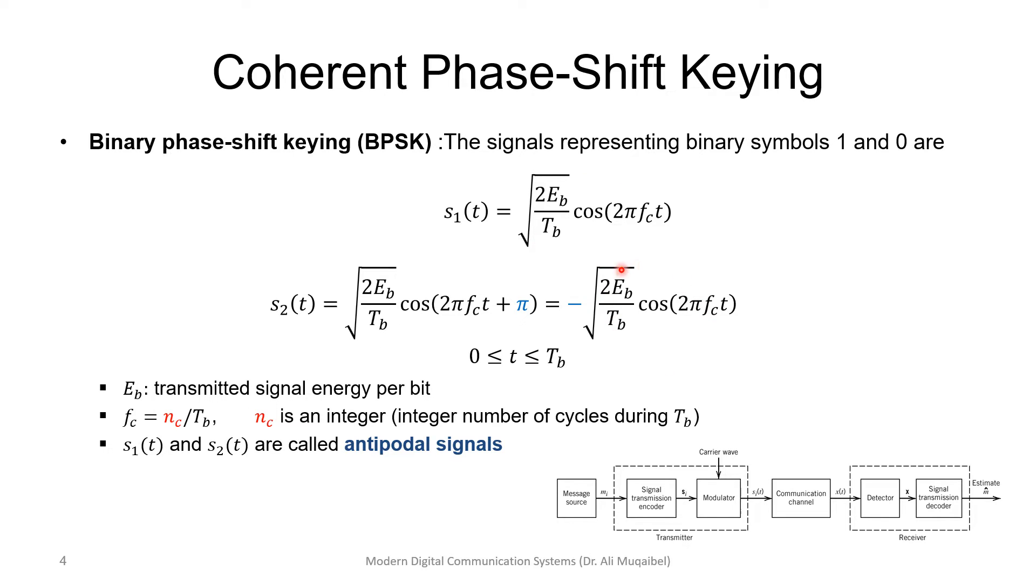The energy would be, if you integrate over one period, and then you will get the energy to be Eb. So, Eb is the transmitted signal energy per bit. Fc is the frequency, and we pick the frequency to be an integer multiple of 1 over Tb, the bit duration. So, we get integer number of cycles within the bit duration.